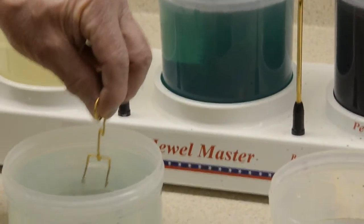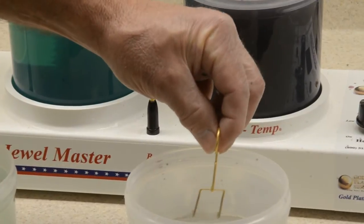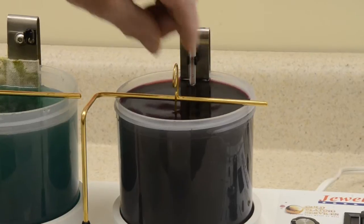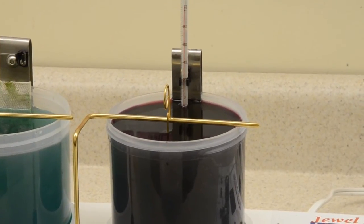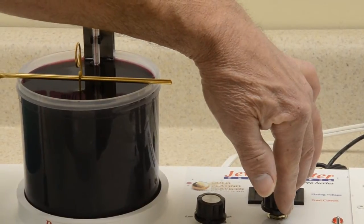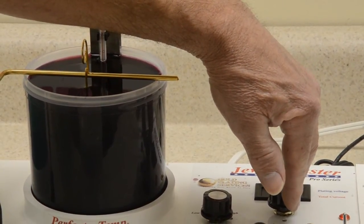Now we'll rinse. And then we'll go into a final distilled water rinse. And then we'll go into our gold solution. I need to adjust the voltage up to about 2.7 volts.